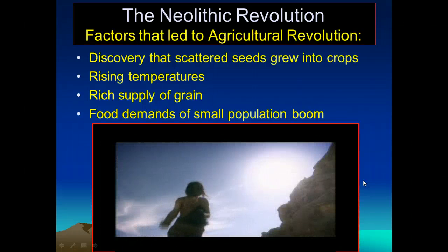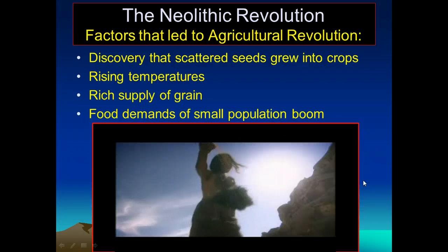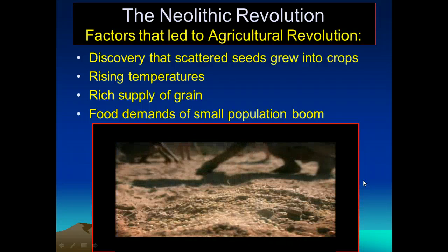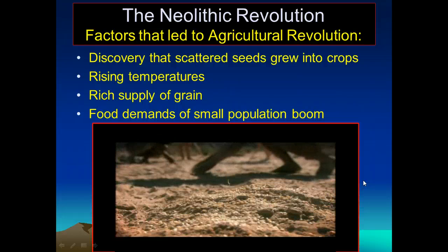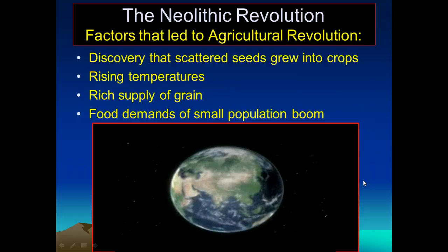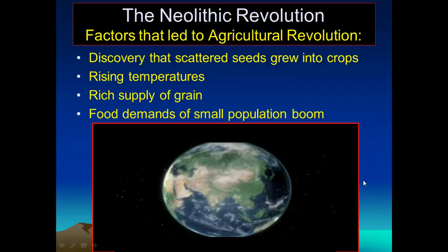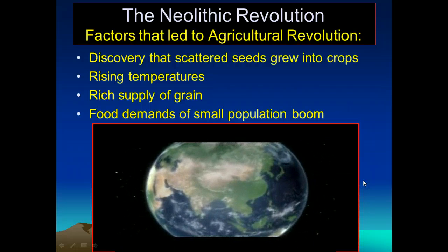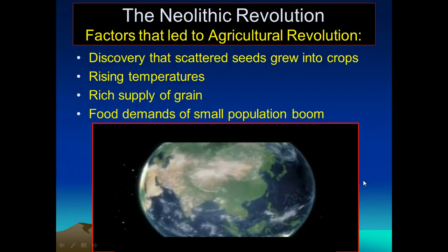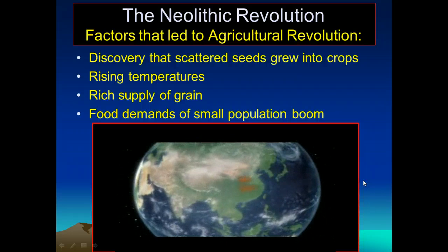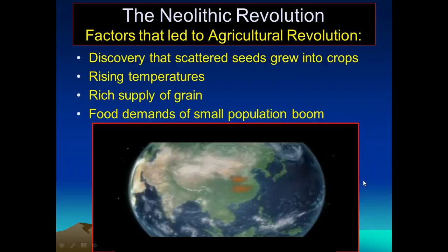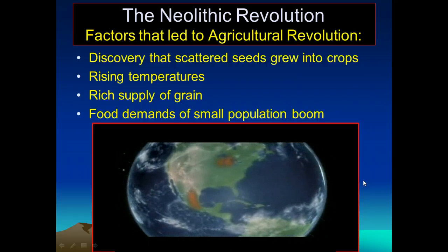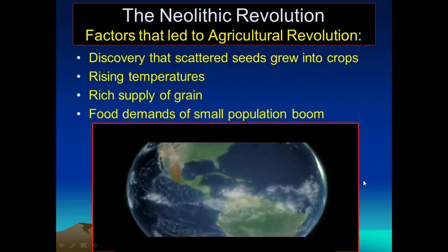The Stone Age people of the Middle East were becoming farmers — the first farmers in the world. There are only a few parts of the ancient world that developed farming independently. Not long after the Middle East came China, where people grew another high-yield cereal grass: rice. Pockets of farming also emerged in the Americas, based on corn, squash, and beans.